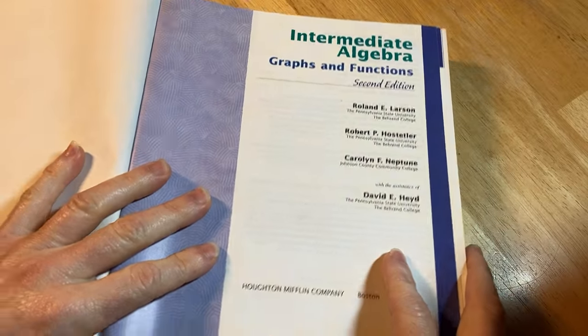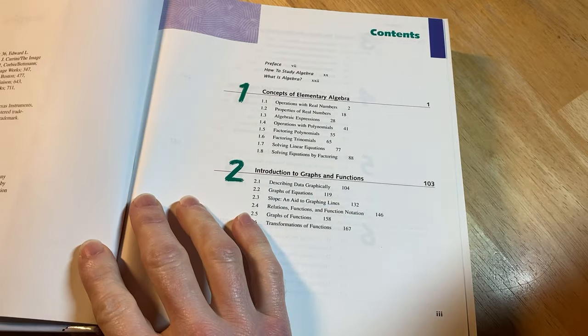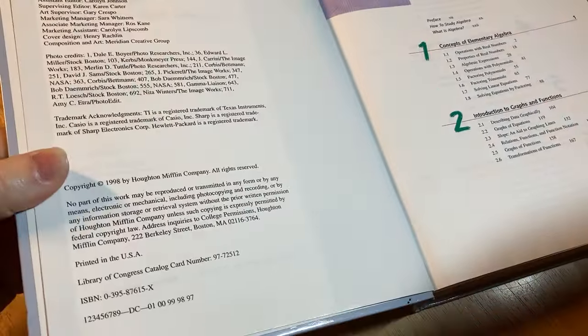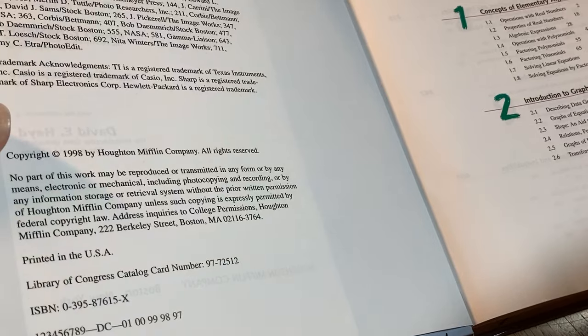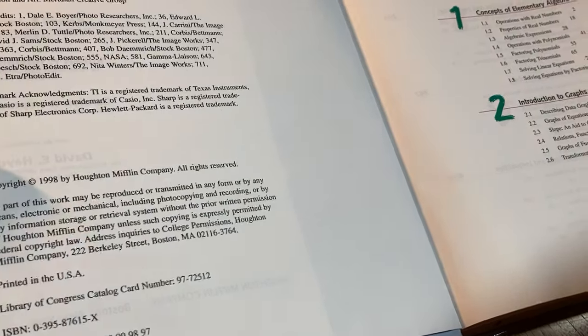So let's go ahead and open it up and take a brief look at the contents. Here are the people who wrote the book. This is the second edition. It doesn't matter too much which edition you get. Here's the copyright. This particular one is from 1998 so it's certainly been a while.